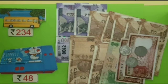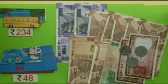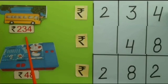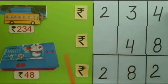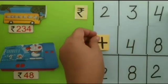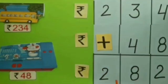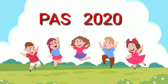Now we will see how we can solve this sum in written form. The cost of toy bus is rupees 234 and the cost of geometry box is rupees 48. We will add both amounts and the answer will be rupees 282.